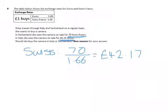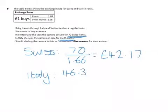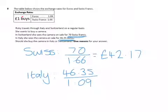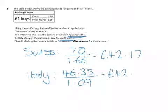However, in Italy, where the currency is euros, it's 46.35 euros. So to get that into pounds, we need to divide by 1.09, which is the conversion of one pound to euros. And that gives us 42 pounds and 52 pence.